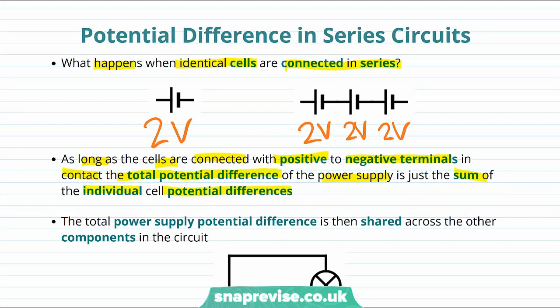Let's look at our example. By positive to negative terminals in contact, we just mean that the negative terminal of one cell sees the positive terminal of the cell next to it. In this case, the total potential difference is just the sum of the individual potential differences of each cell — so that's 2 plus 2 plus 2, which equals 6.